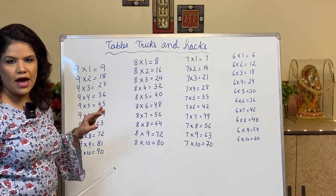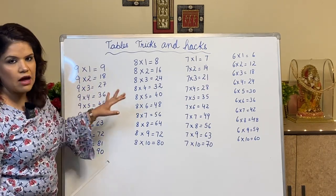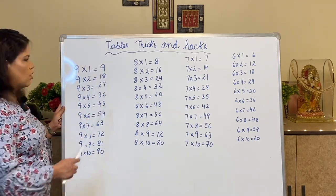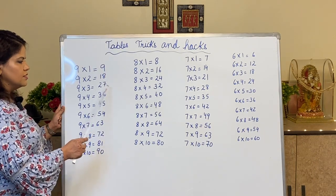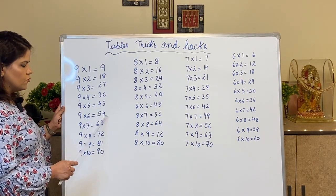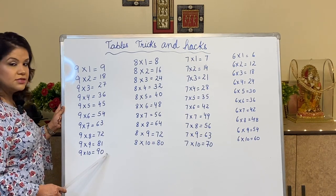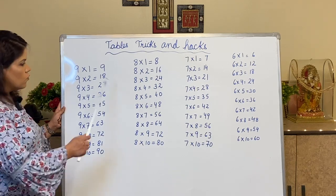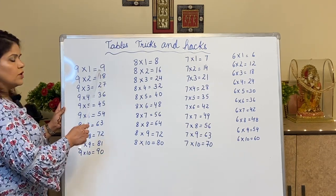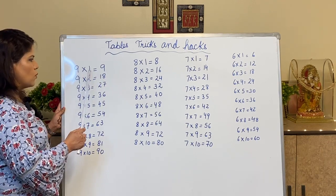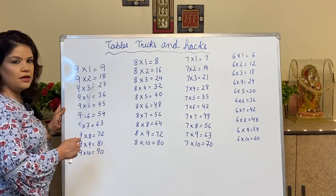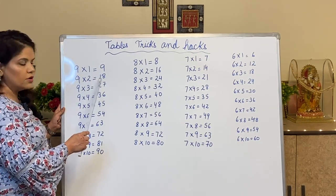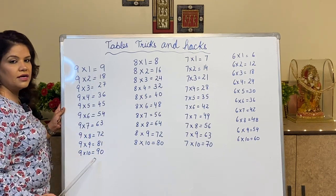Now the third trick for the table of 9 is about what happens when you are writing it. The trick is that in the 1s place, the reverse counting is going on: 9, 8, 7, 6, 5, 4, 3, 2, 1, 0. So this entire reverse order counting is in the 1s place. Since we don't have any number at the 10s place when multiplying with 1, from the second number — when multiplying with 2 — we will have a 10s digit, and from here the number will start increasing.